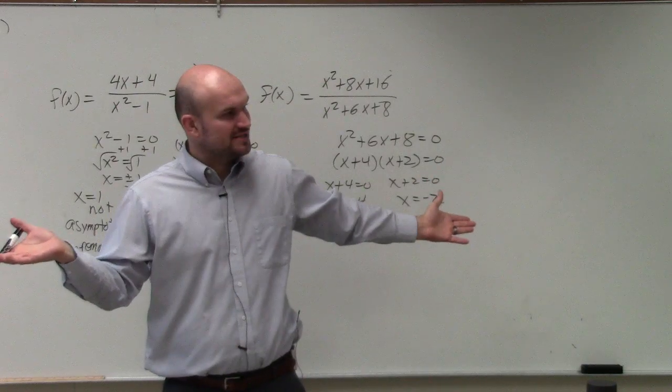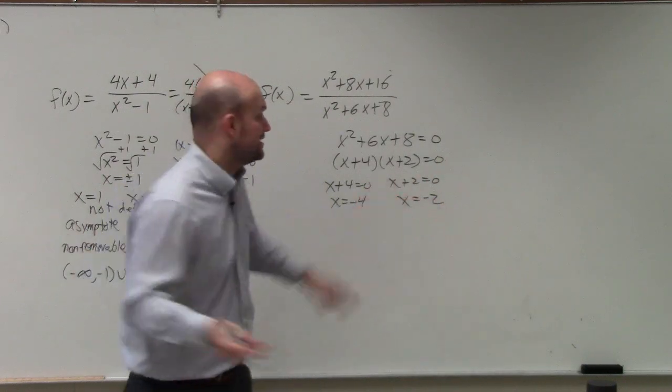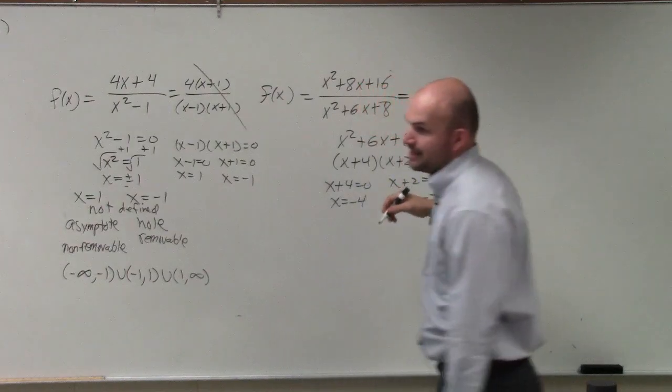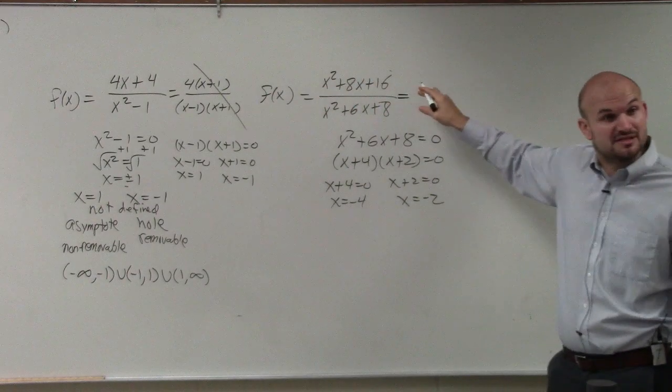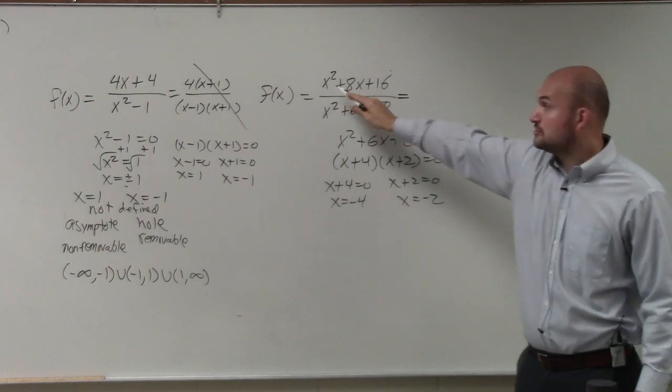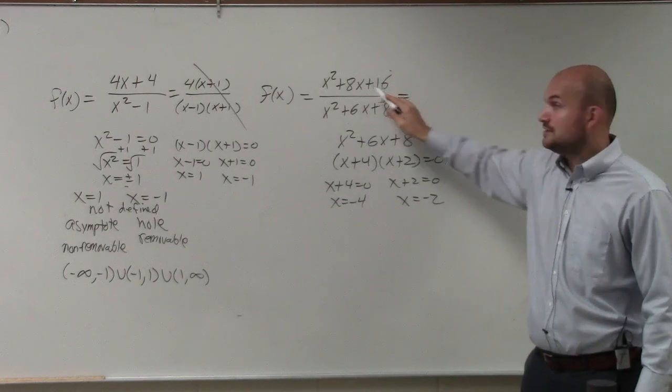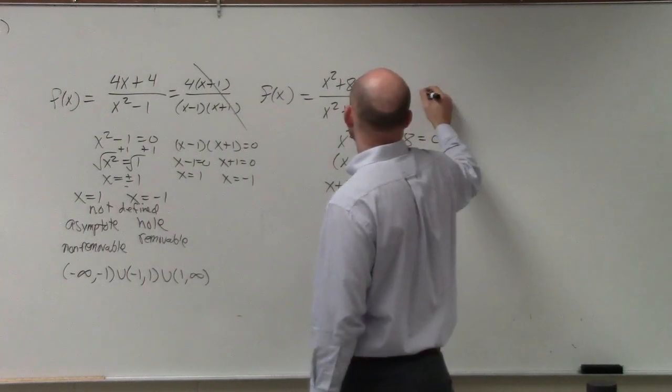What kind of discontinuities are they? Are they holes or are they asymptotes? I don't know until I simplify both my numerator and my denominator. This, I notice, is a perfect square trinomial. Square number, square number, 2 times both of those numbers.